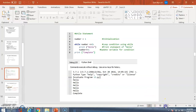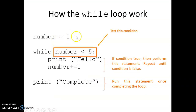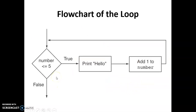To summarize how the while loop works: test the condition — if true, perform the statement and repeat until the condition becomes false, then execute the following statement. In the flowchart, if `number <= 5`, print hello (note: the shape should be a parallelogram for input/output), add 1 to number, go back to the loop, and check again until false.